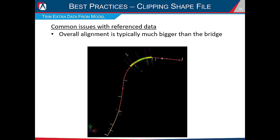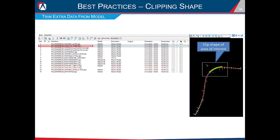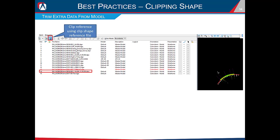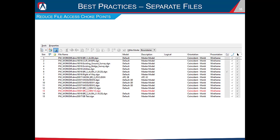For best practices, the first is trimming unneeded data from your model. Alignment files are typically much bigger than the bridge area you need, and the same goes for terrain models. The solution is to create a clip shape of your area of interest in a separate DGN file, reference it into your OBM model, select the alignment file you want to clip, clip it using that clip shape reference, and then turn off the clip shape. This leaves you with a nicely trimmed alignment that makes zoom extents and locating your bridge much easier.